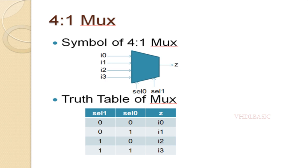If you see the truth table of the mux with respect to select, the output will be defined. If both the selects are 0, i0 will be assigned to output Z. If both the selects are 1, then i3 will be assigned to output Z. If select1 is 0 and select0 is 1, then i1 will be assigned to output Z. If select1 is 1 and select0 is 0, then i2 will be assigned to output Z.